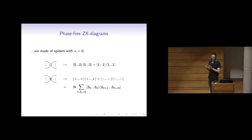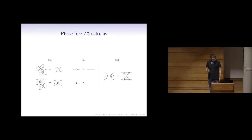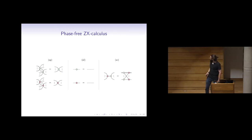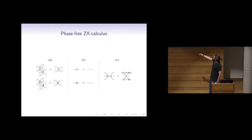There's a strong relationship between these things and doing linear algebra over the field of two elements — the field where plus is XOR, or taking parities. The phase-free ZX calculus has five rules, depending on how you count and what you do with normalization factors, which I usually tend to ignore. We have the normal spider fusion rules, the identity rule — any two-legged spider becomes a wire — and then the workhorse, which is strong complementarity.